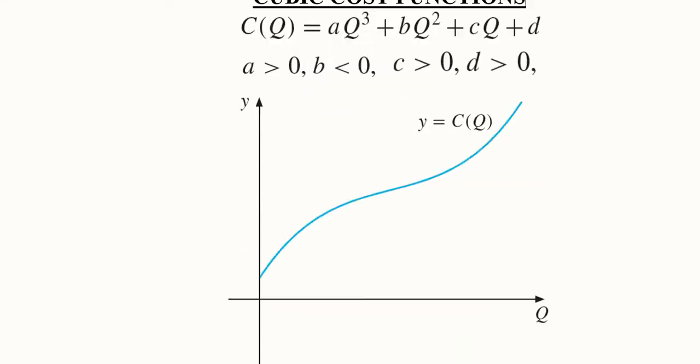Now how does this positivity of a affect the shape of the diagram of a cubic function? When a is positive, then the first wiggle will be upward and the other wiggle will be downward.